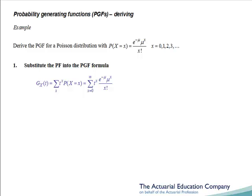In order to sum this series, we do step 2, which is to write out the first couple of terms so we can see what's going on. When x equals 0, we have t to the 0 times e to the minus mu times mu to the 0 over 0 factorial, which simplifies to e to the minus mu. When x equals 1, we have t times e to the minus mu times mu over 1 factorial, simplifying to t mu e to the minus mu. When x equals 2, we have t squared times e to the minus mu times mu squared over 2 factorial, giving t squared mu squared e to the minus mu over 2 factorial, and so on.